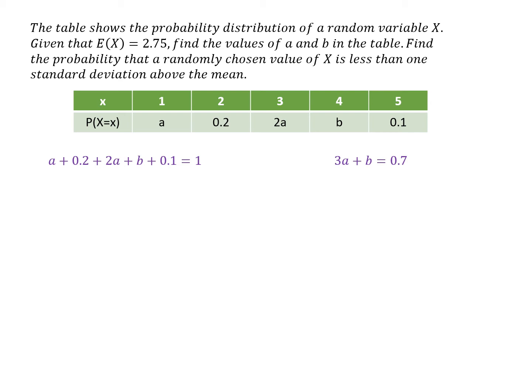Now I can use the fact that the expected value of X is 2.75. The expected value of X I get by multiplying 1 by A, 2 by 0.2, all of these things multiplied together and then adding them. So the equation I derive from that is this one, and that simplifies to 7A plus 4B equals 1.85.